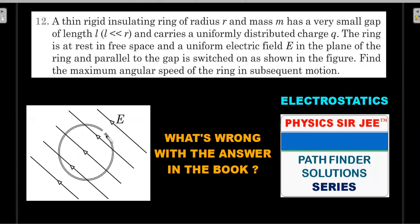The ring is at rest in free space and a uniform electric field E in the plane of the ring and parallel to the gap is switched on. What is meant by free space? There's no gravity. Find the maximum angular speed of the ring in the subsequent motion.